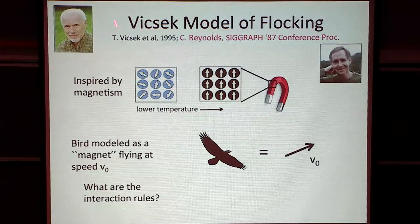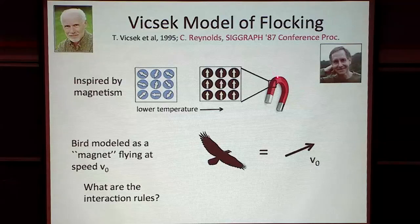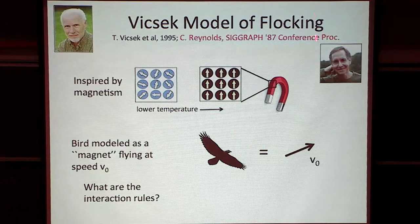This is an example of a phase transition in physics — like liquid freezing into ice. So the idea is: take a bird, model it as a magnetic moment or spin, a velocity vector. It's a flying spin with a fixed speed, fixed length. The only degree of freedom is the direction in which it travels. Now, what are the interaction rules? At every time step, each bird looks at the neighbors within a circle — a fixed radius in 2D — and aligns with them.